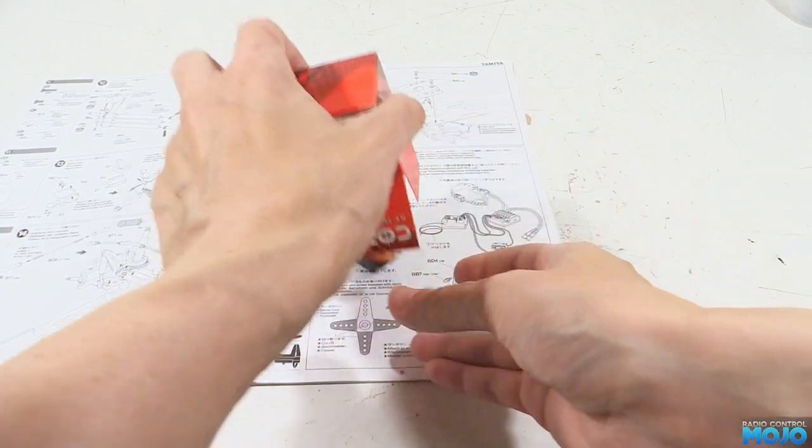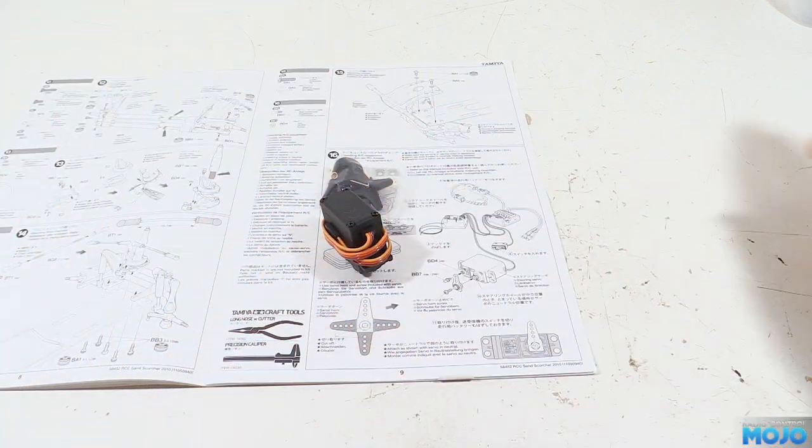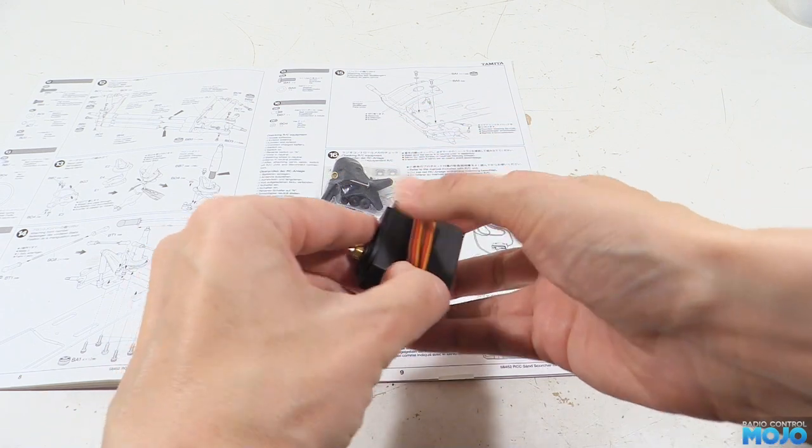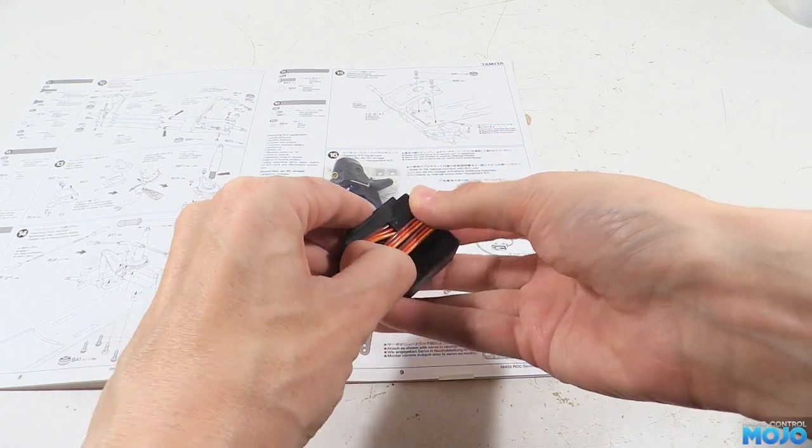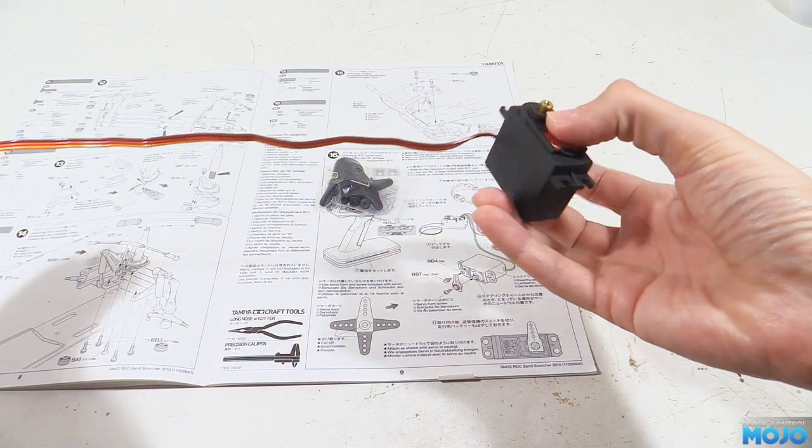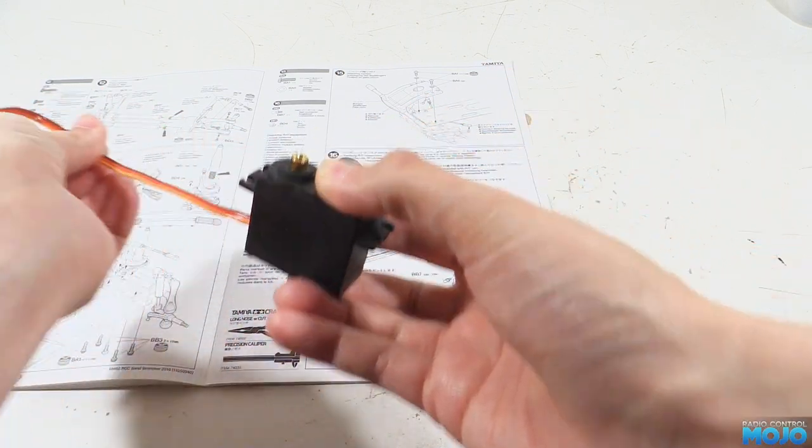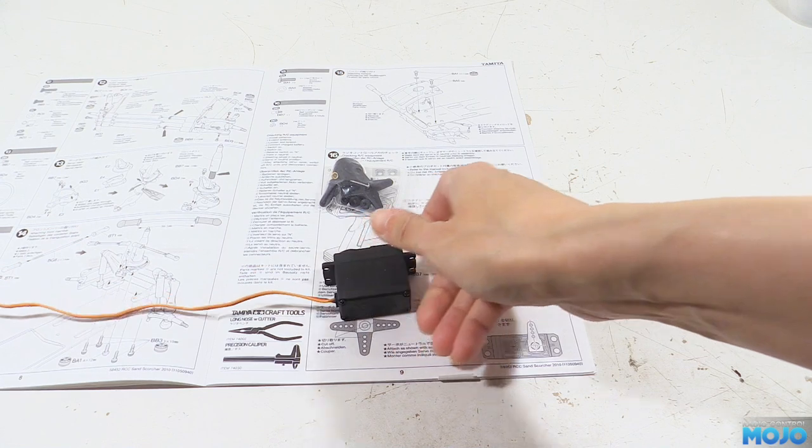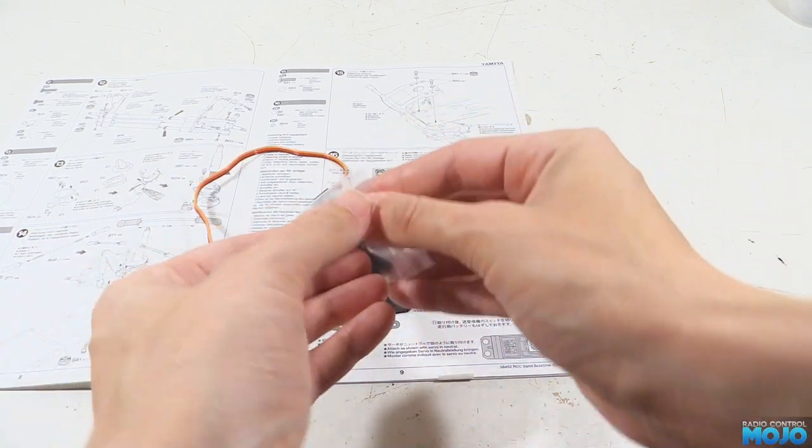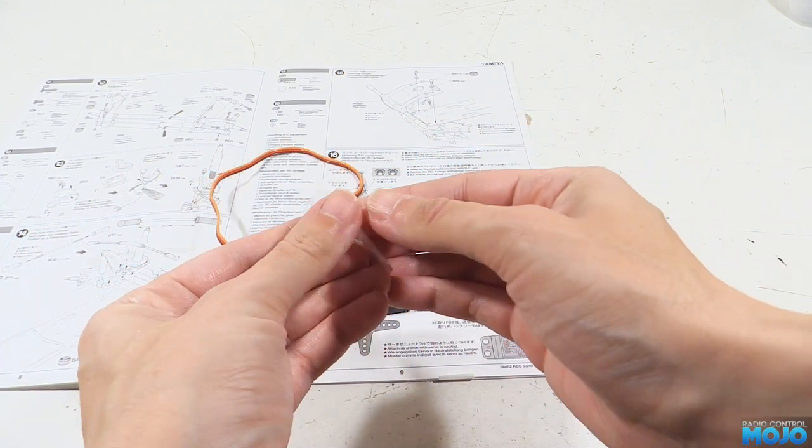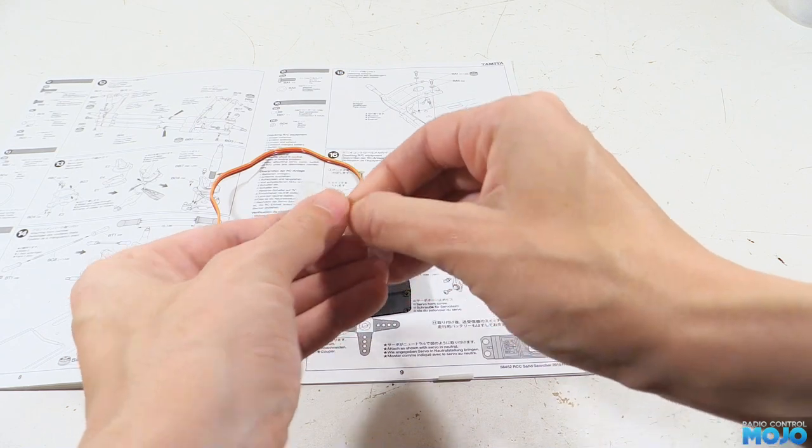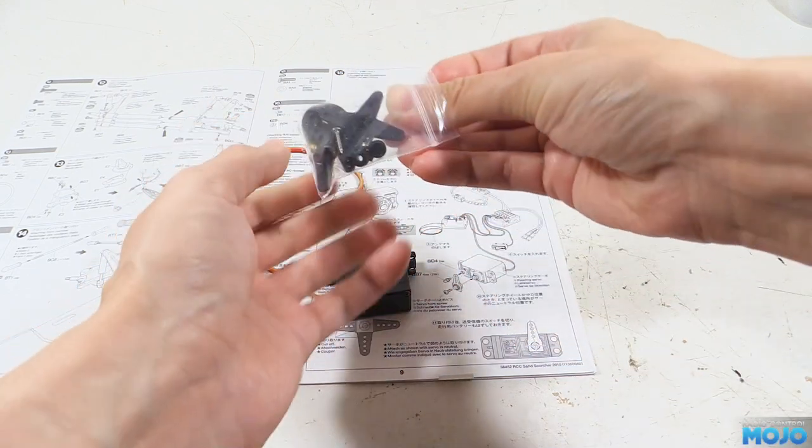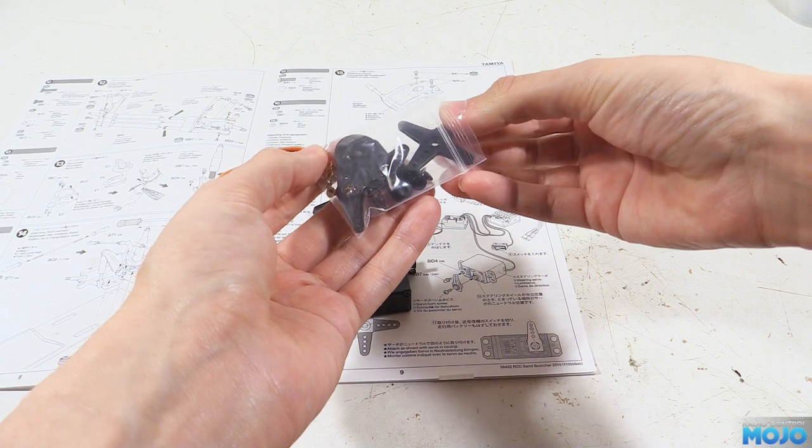So here we are at step 16, the steering servo. We've got a core RC servo, but it doesn't really matter too much what you're going to use. We don't need an especially high torque servo or a fast one. We'd get away with a plastic gear servo too, with the stock servo saver protecting things. However, I'd really recommend a metal gear servo, but other than that, any standard size servo is going to do the job.